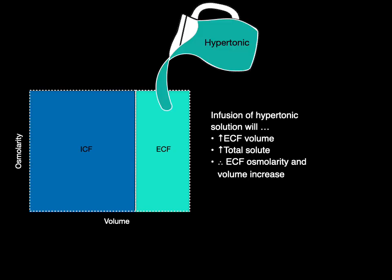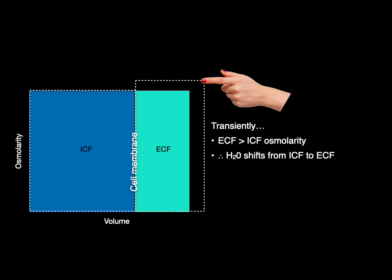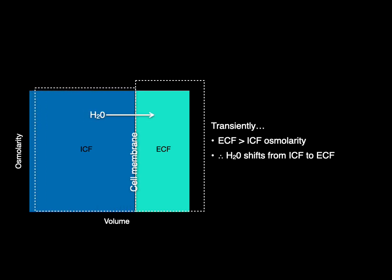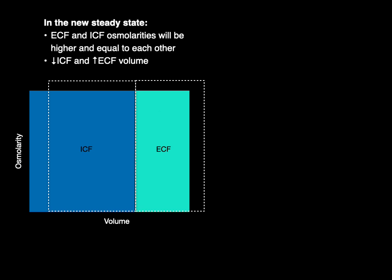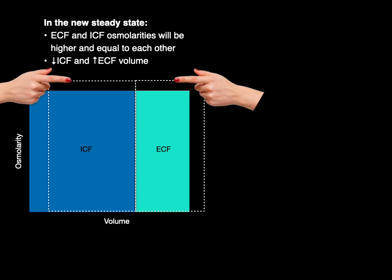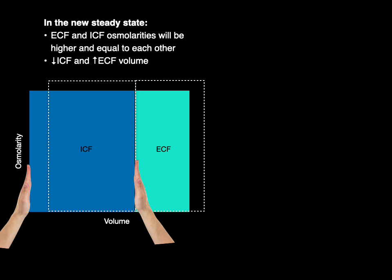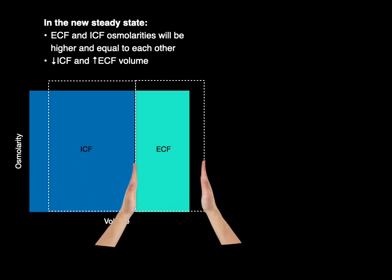The infusion of hypertonic solution will increase extracellular fluid volume and total solute, therefore extracellular fluid osmolarity and volume increase. Transiently, extracellular fluid osmolarity is greater than intracellular fluid osmolarity. Therefore, water shifts from the intra- to extracellular fluid until the osmolarity equalizes. As a result, in the new steady state, extracellular and intracellular fluid osmolarity will be higher and equal to each other, while because of the water shift, intracellular fluid volume goes down and extracellular fluid volume goes up.